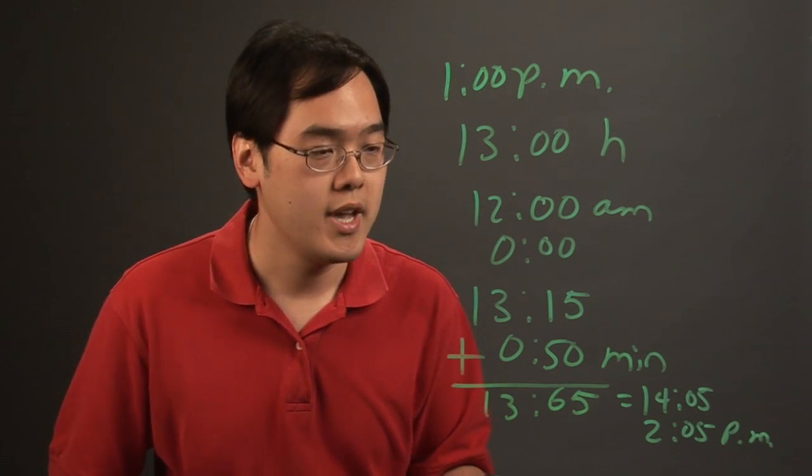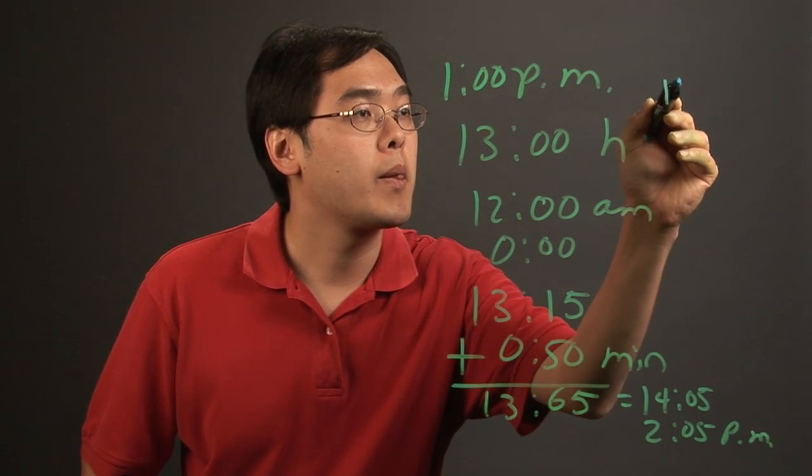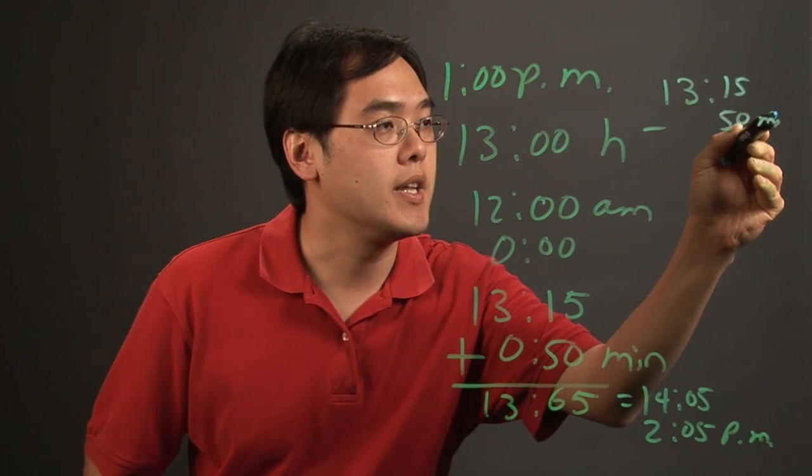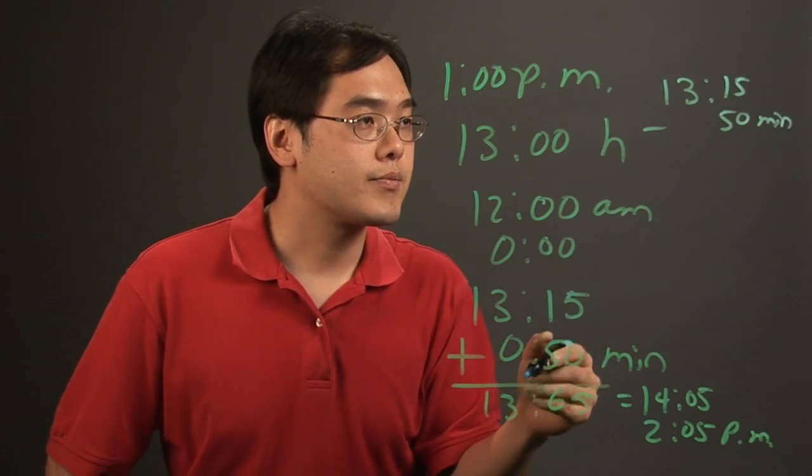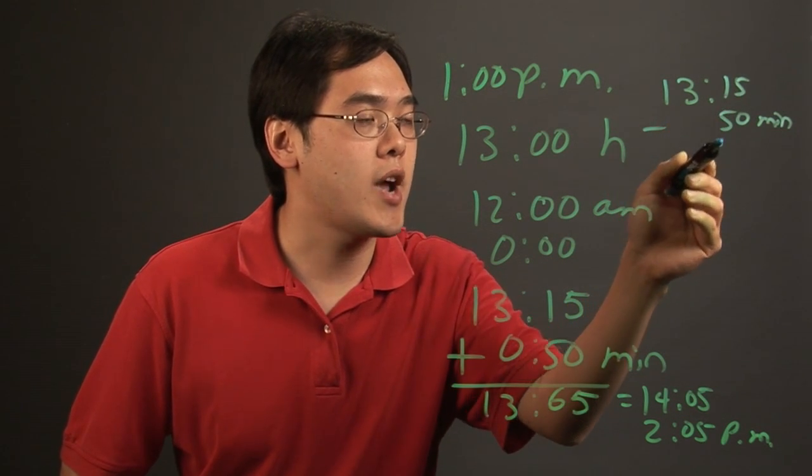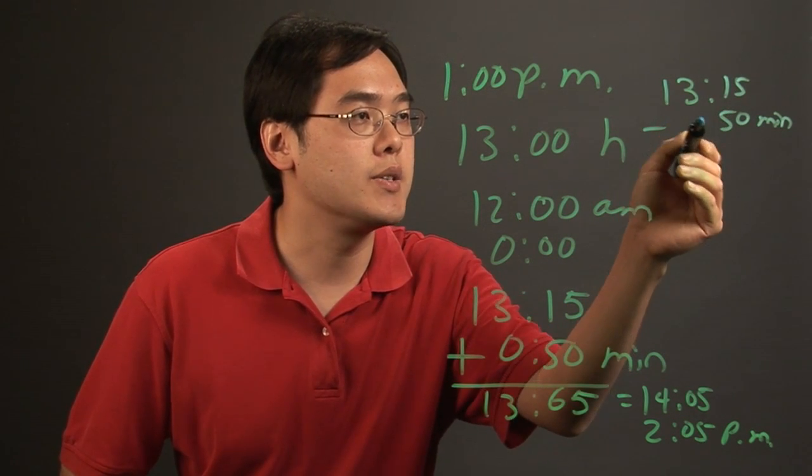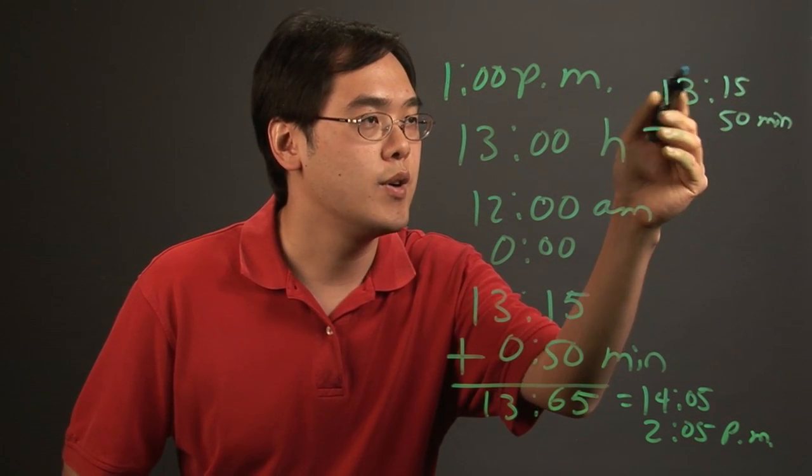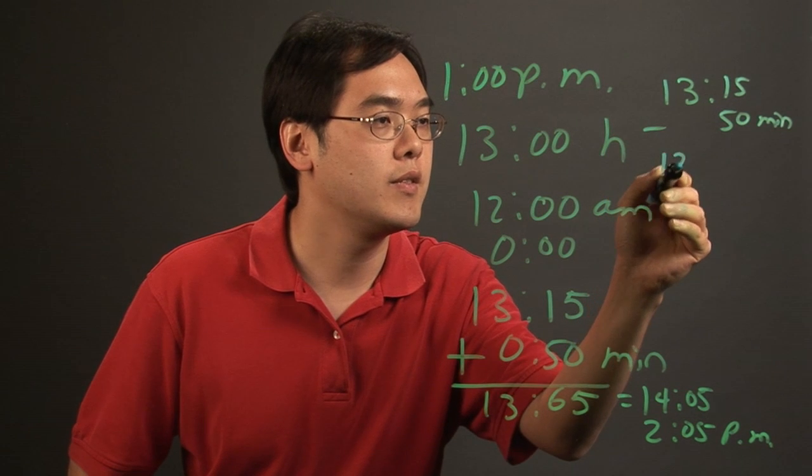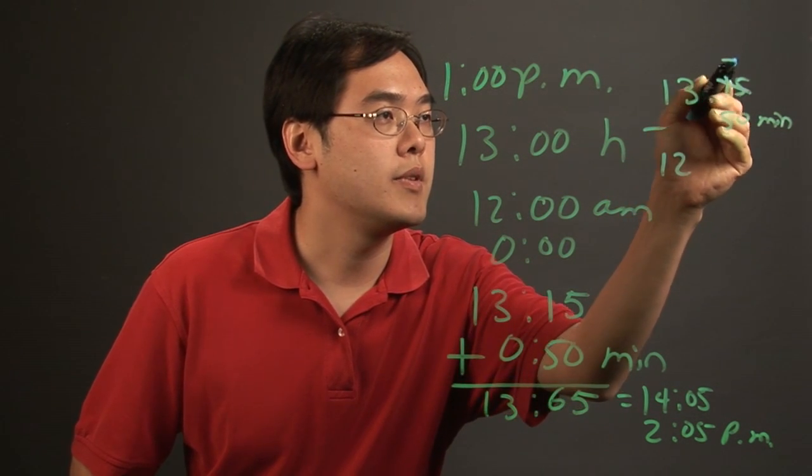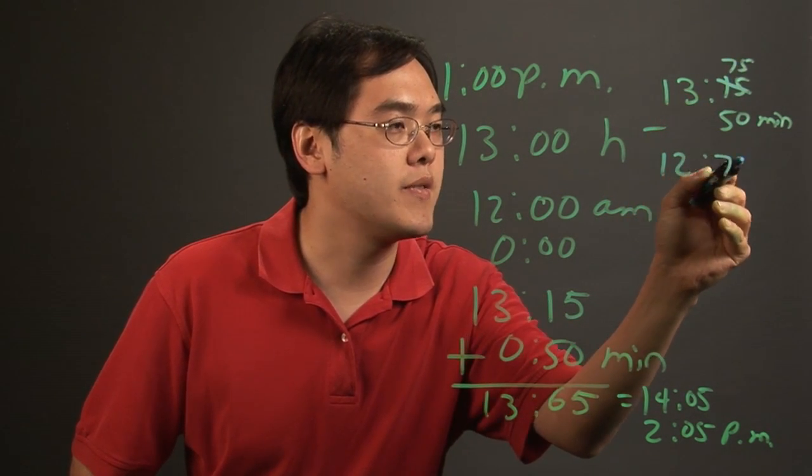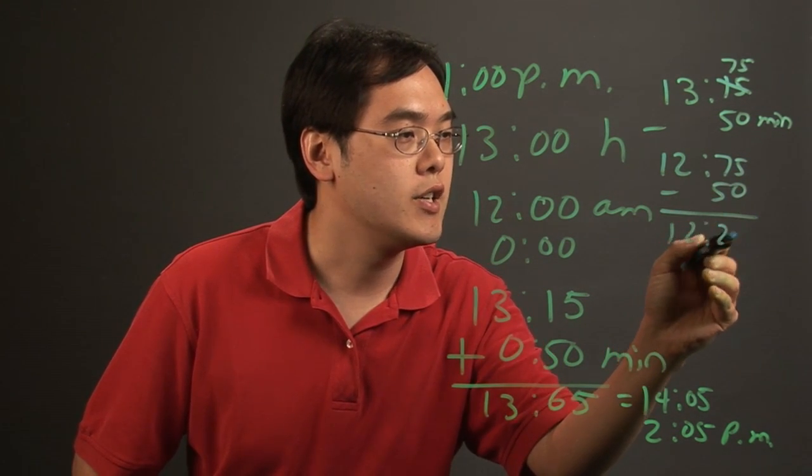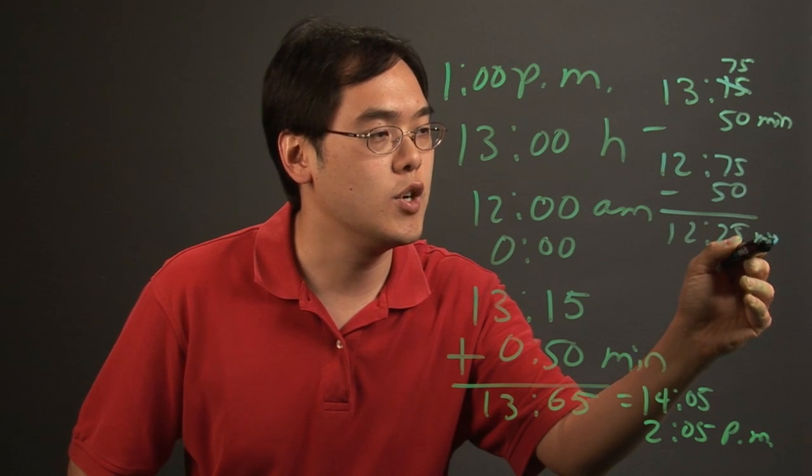Now if you have 13:15 and you're subtracting 50 minutes—13 hours and 15 minutes subtracting 50 minutes—what you want to think about is borrowing, because you can't subtract 50 minutes from 15. You want to borrow from the hours, so you have 12 hours and this becomes 75 minutes. So 12 hours and 75 minutes minus 50 minutes, you're gonna have 12 hours and 25 minutes left over.